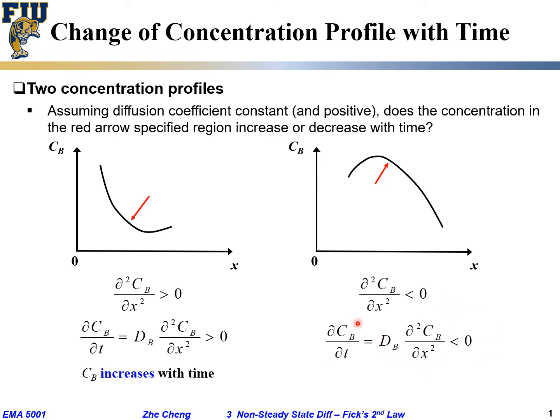Means partial differential concentration with time would be negative, which means over time this local concentration has got to decrease, and that makes sense, right?